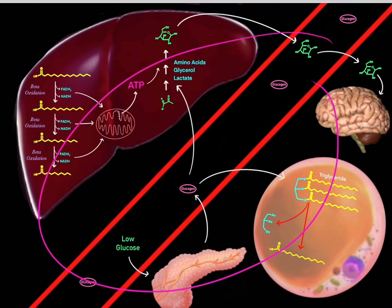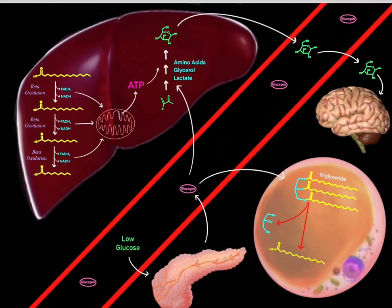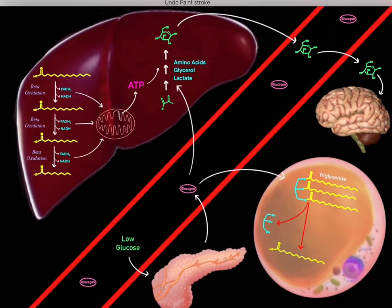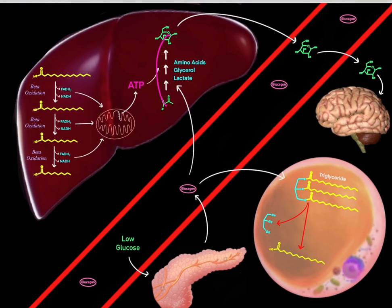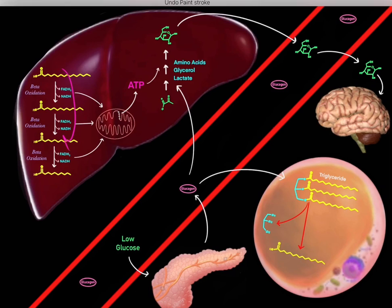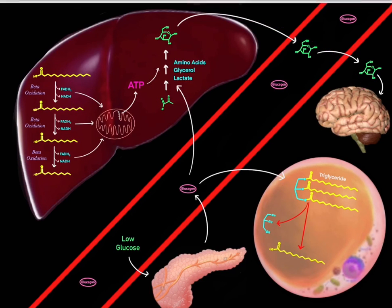This is what happens when our body enters a fasted state. Low blood glucose triggers glucagon release from the pancreas, which orchestrates metabolic processes geared toward biosynthesizing new glucose. The key idea is that we burn fat — via beta-oxidation — to create the ATP necessary to biosynthesize glucose molecules. The liver releases that glucose into the bloodstream to restore blood glucose concentrations and keep the brain supplied with energy.